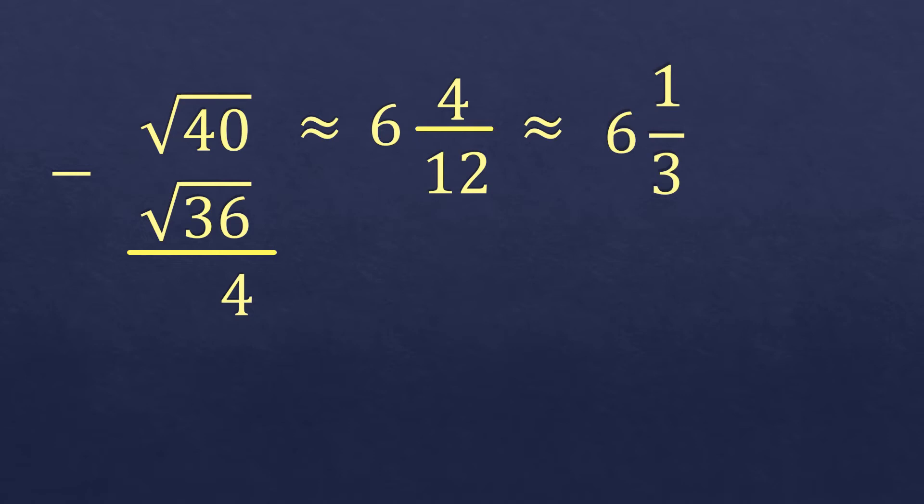By the way, I'm using approximately, because I'm referring to the square root of 40. If you reduce 4 twelfths, it will become one-third. And then convert it into decimals, which is 6.3333 and so on.